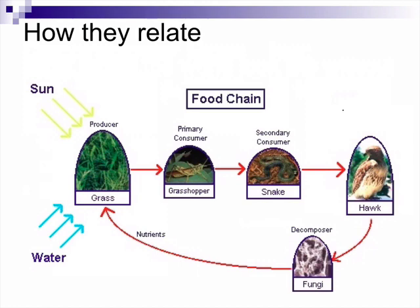Here is a very simple food chain. It starts with the sun and some water — the grass makes food for itself. Then you have a bug as a primary consumer eating the producer. Secondary consumers eat things that eat plants, so the snake eats the grasshopper. At the top of the food chain, a hawk eats the snake. The energy passes from the sun, through the grass, through all the animals, all the way up to the hawk. Eventually that hawk will die, and decomposers return the nutrients back to the soil — and the process starts all over again, like a big circle.